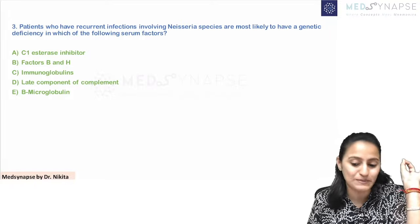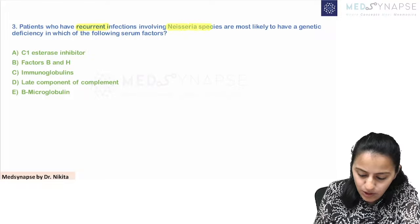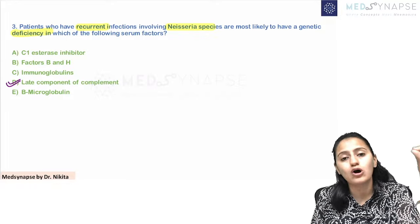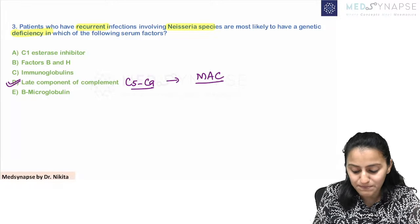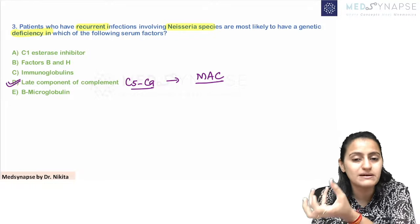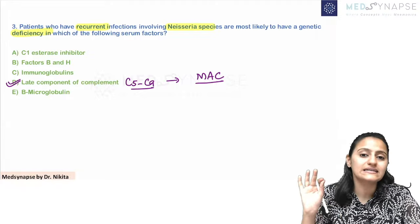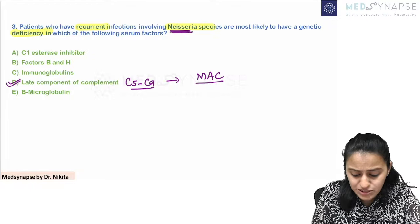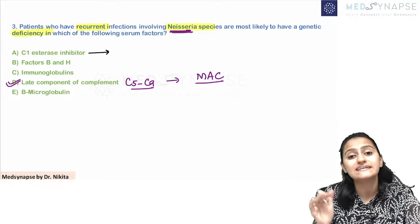Moving to the next question — this is a must-know, you cannot get this wrong. It's almost a one-liner: patients who have recurrent infections involving Neisseria have deficiency in which of the following? It is the deficiency of the late components of complement — C5 to C9 — which form your membrane attack complex. So late complement deficiency leads to recurrent Neisseria infections.